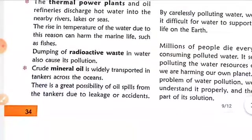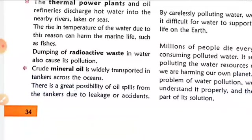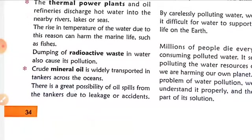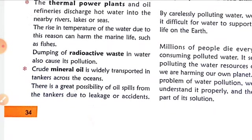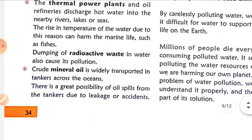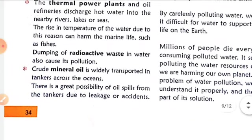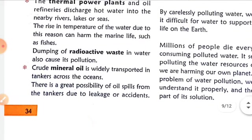Sixth, crude mineral oil is widely transported in tankers across the oceans. There is a great possibility of oil spills from tankers due to leakage or accidents. This can damage the marine ecosystem and pollute the water bodies. When oil spills in the water, it damages the marine ecosystem and most fish or other marine life are harmed.